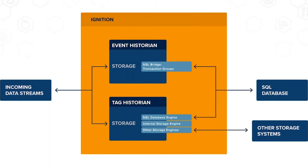Those using the internal storage engine are generally folks without any event-type history to store, because event history does go into a SQL database. So if you have event history, you'll have a SQL database connected anyway and might as well use it for tag history too. The internal storage engine is available starting in Ignition 8.1.